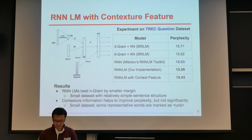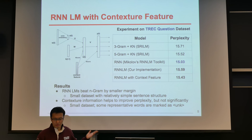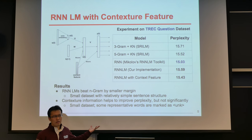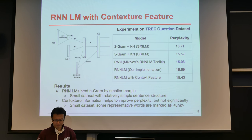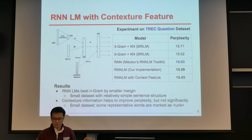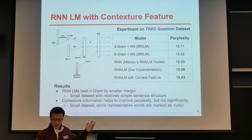Next, we introduced the context feature. The context feature encodes the probability distributions of the sentence among all sentence categories. We explored a number of different RNN structures for incorporating this context feature, and the one shown here gave us the best result. The table on the right-hand side shows the experiment results on the smaller TREC question dataset. The additional row at the bottom shows the perplexity of the RNN language model with the context feature. The RNN language model outperforms the n-gram model, but with a very small margin in this dataset. The context feature helps improve perplexity, but not very significantly in this experiment.